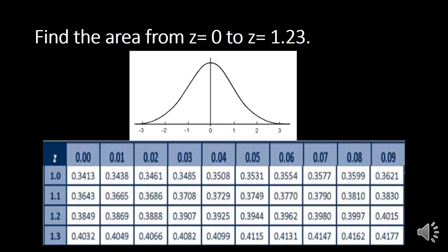So illustrating, we can locate 1.23 somewhere on the right side of the mean. We draw a line connecting to the curve, and the area we are looking for is between z equal to zero and z equal to 1.23. Since the area is connected to the middle — the center, the mean, or zero — we look it up on the z-table.